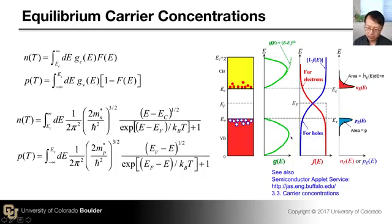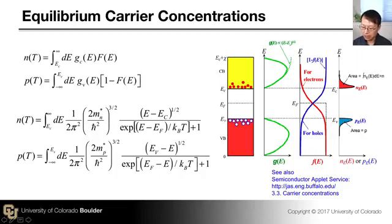Likewise, the density of states of the valence band near the top goes as the square root of E, and multiplying by (1 minus F) — the probability of finding a hole or finding an empty state — gives a distribution of holes as a function of energy in the valence band. Integrating the electron distribution across the conduction band gives the area shaded red, which is the total electron density in the conduction band. The area shaded blue gives the hole density in the valence band.